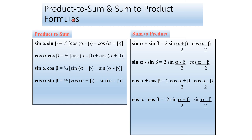This is the product-to-sum and sum-to-product formulas. Product to sum: sin alpha sin beta equals one-half times [cos(alpha minus beta) minus cos(alpha plus beta)]. Cos alpha cos beta also uses the one-half factor. We apply these to reduce the equations. Sum-to-product equations follow similarly.